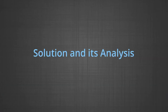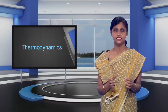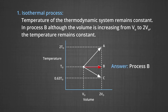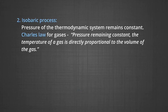In the first case — the isothermal process — the temperature of the thermodynamic system remains constant. In process B, although the volume increases from V₀ to 2V₀, the temperature remains constant. Hence the answer is process B. In the second case — the isobaric process — the pressure of the thermodynamic system remains constant.